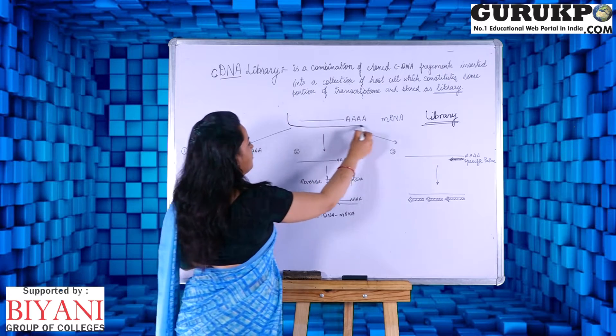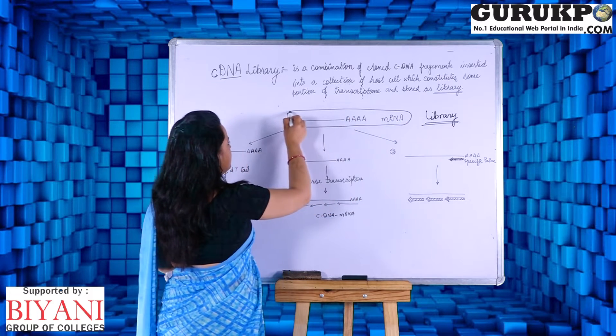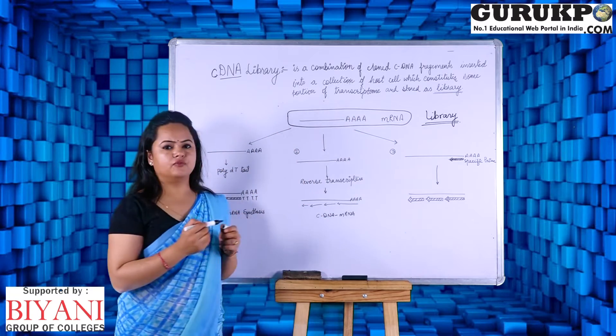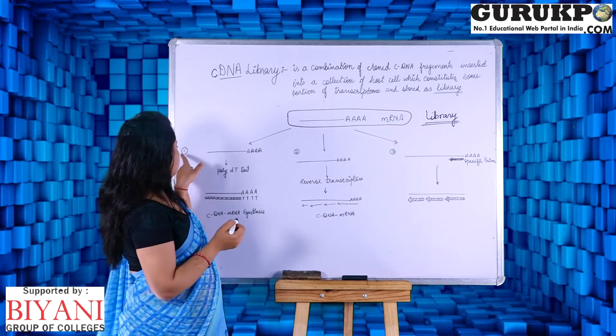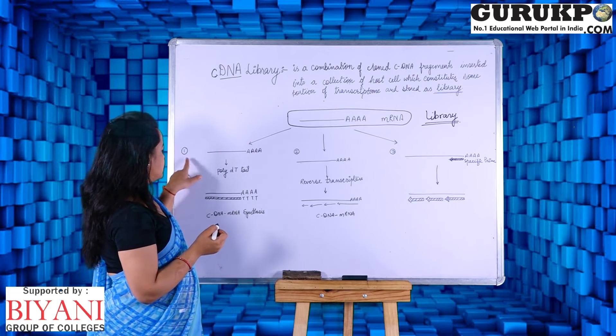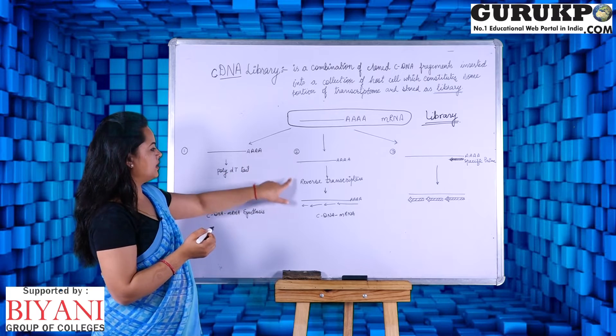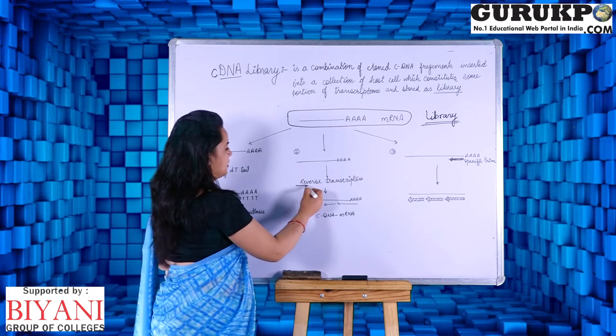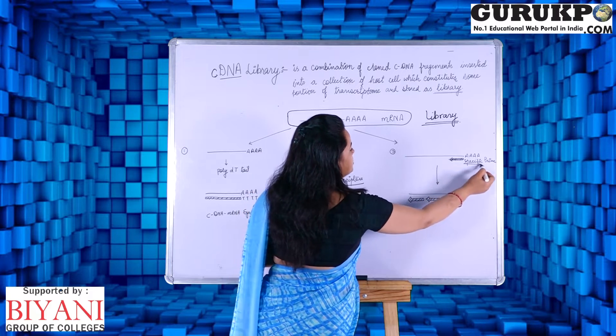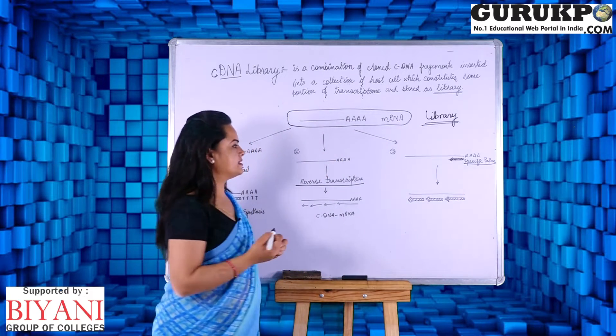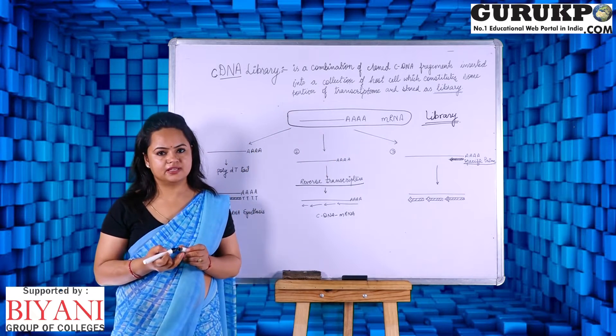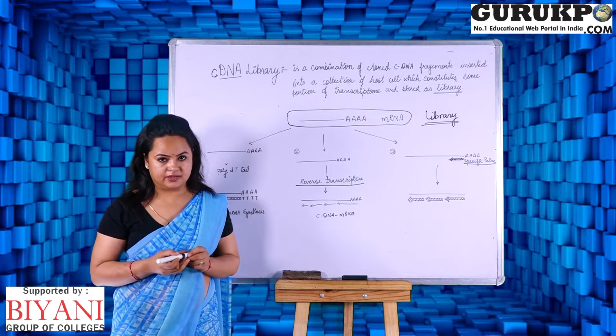So if we have a messenger RNA isolated from a cell, we can opt for any of the three ways. First is the poly-dT tail, second is we can use an enzyme reverse transcriptase, and third is we can design a specific primer which is exactly having the complementary sequence of the messenger RNA.